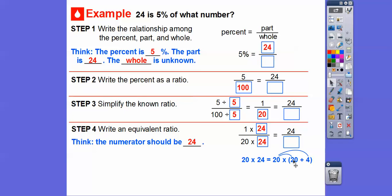And then 20 times 4. Well, 2 times 4 is 8, so add a 0 is 80. So we get 480. So 24 is 5% of 480.